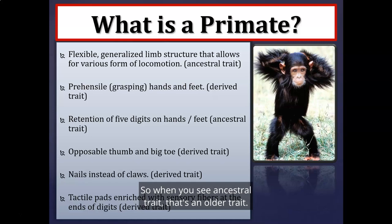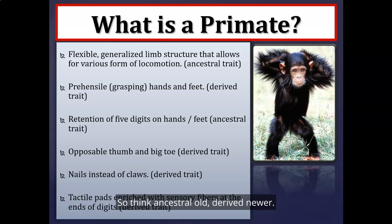Other characteristics: ancestral traits are older traits that encompass the vast majority of the primate order, while derived traits are newer traits. Think ancestral as old, derived as newer.